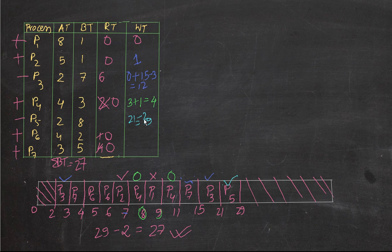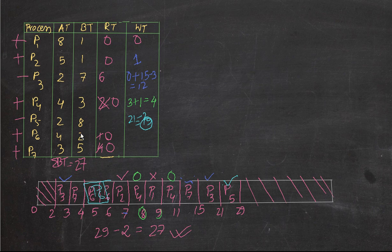For P6: it appeared just once and didn't context switch mid-execution, so we treat it as one block. Visiting time 4 minus arrival time 4 equals 0. The waiting time for P6 is 0.